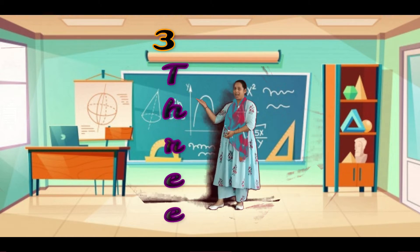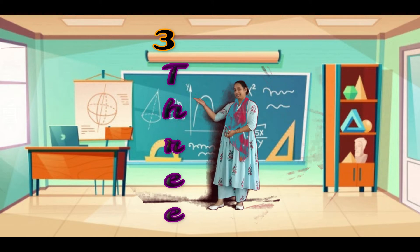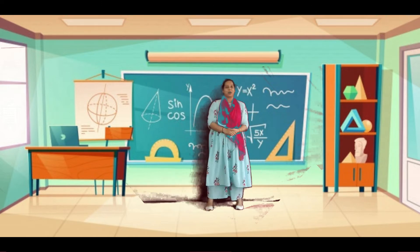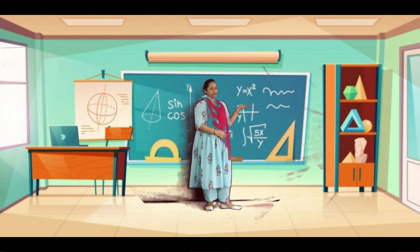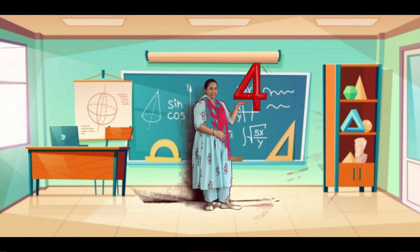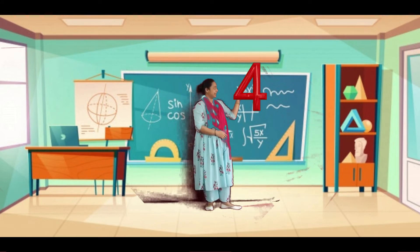Now number Three. Spelling: T, H, R, E, E. Three.